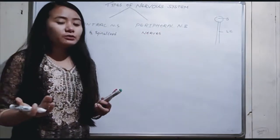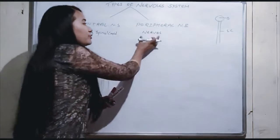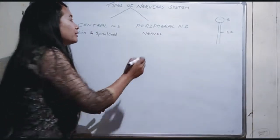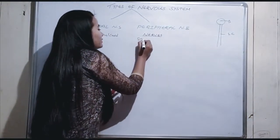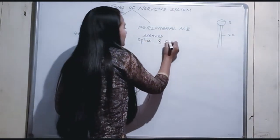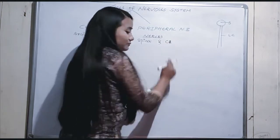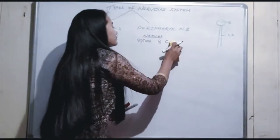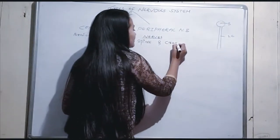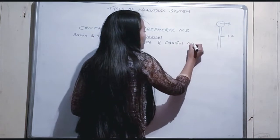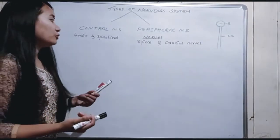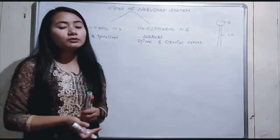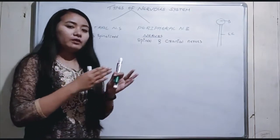Nerves are bundles of axons. The Peripheral Nervous System includes spinal nerves and cranial nerves. You may be confused — last time we discussed three different types of nerves by function: afferent nerves, efferent nerves, and mixed nerves. Those are divided by the way they carry information.